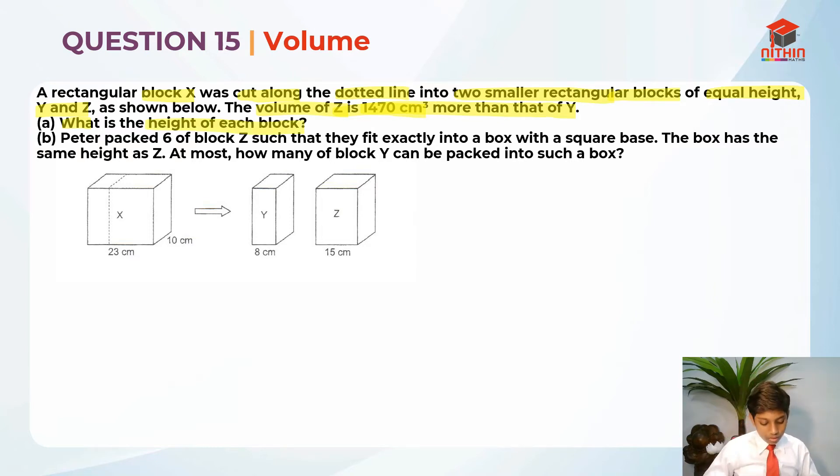So let's highlight that. Rectangular block X was cut along the dotted line into two smaller rectangular blocks of equal height. So basically, we know the breadth is 10 cm. So in order to do this, we need to use a topic in P6 volume, which is a concept that height equals volume divided by base area. Base area is basically length times breadth.